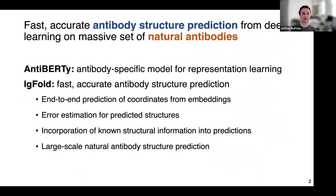Today I'll talk about a couple of our models. The first is AntiBERTy, which is an antibody-specific language model that we've trained for representation learning. The main model is IGFold, which predicts antibody structures from the representations learned by AntiBERTy. We can use that model to predict structures end-to-end in a fast way, estimate the error of those predicted structures, incorporate known structural information, and apply the model to a large set of natural antibody sequences to further expand the observed antibody structural space.